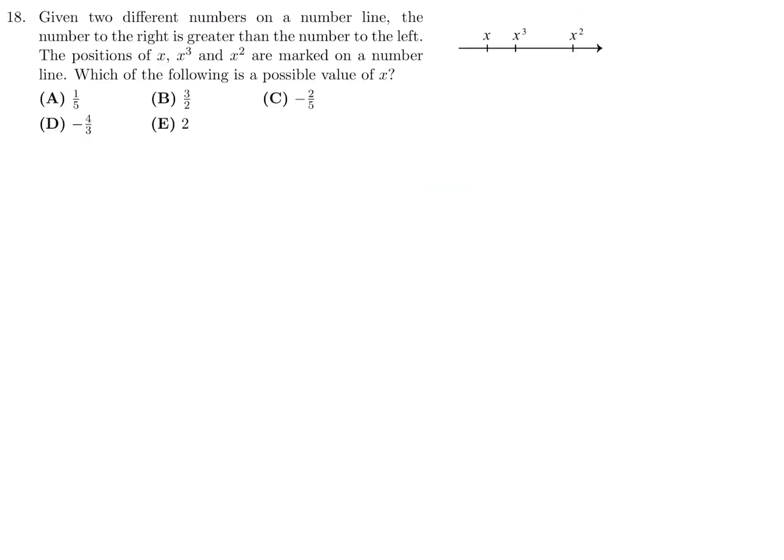Given two different numbers on a line, the number to the right is greater than the number to the left. The positions of X, X cubed, and X squared are marked on a number line. Which of the following is a possible value for X? X, X cubed, and X squared. Let's figure out what it is for each of these. 1 fifth, 3 over 2, minus 2 over 5, negative 4 over 3, and 2. We get 0.2, 0.008, 0.04. Well, this doesn't seem to fit our criteria that the numbers seem to be getting bigger as you go that way. So that's not right.